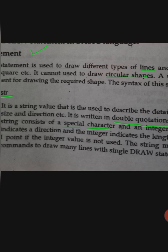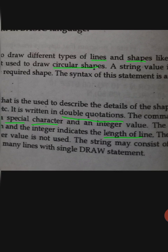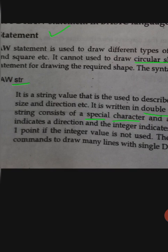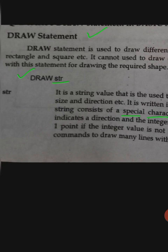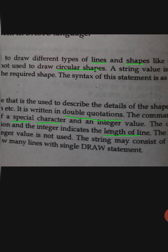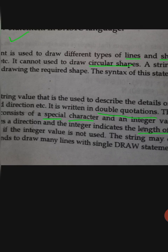The character indicates a direction and the integer indicates the length of the line. The length is one point if the integer value is not used. The string may consist of multiple commands to draw many lines with a single draw statement, so that lines can be drawn in different directions according to the required shape.